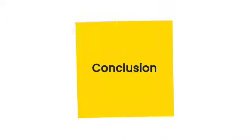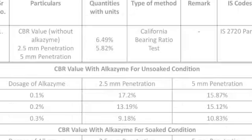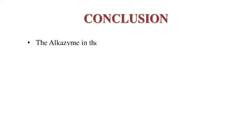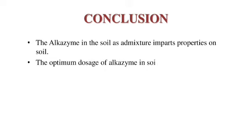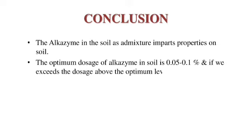The conclusion of our project is that from the results, we found that addition of Alkazim in soil as an admixture impacts the properties of soil. Majorly, Alkazim plays an important role in the bearing capacity of soil. We found that the optimum dose of Alkazim in soil is 0.05 to 0.1 percent, and if we exceed the dose above the optimum level, we observe that the CBR value of soil decreases.